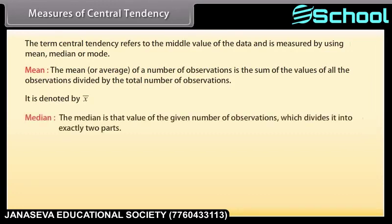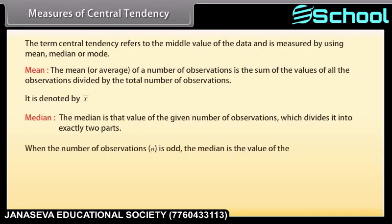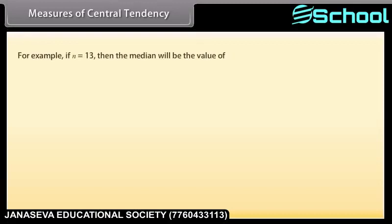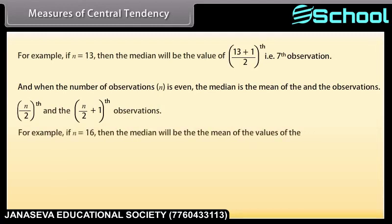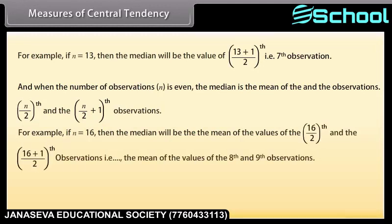The median is that value of the given number of observations which divides it into exactly two parts. When the number of observations n is odd, the median is the value of the (n+1)/2 th observation. For example, if n = 13, the median is the 7th observation. When n is even, the median is the mean of the (n/2)th and the (n/2 + 1)th observations. For example, if n = 16, the median is the mean of the 8th and 9th observations.